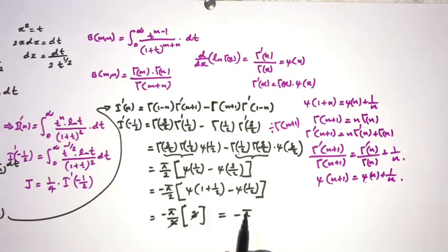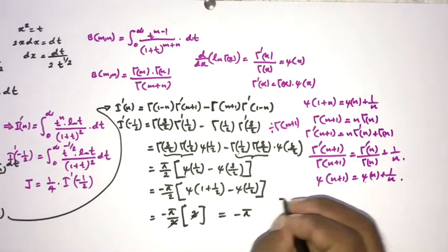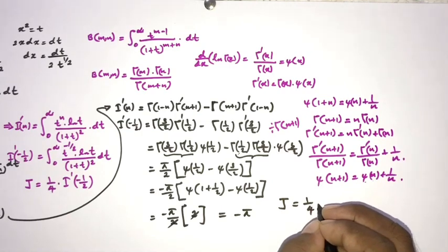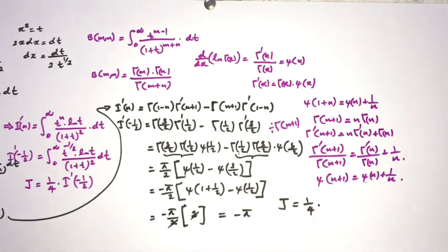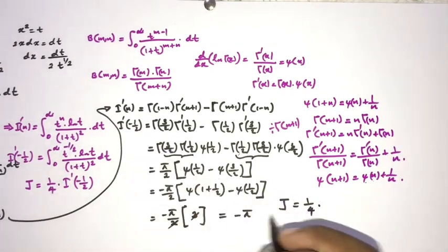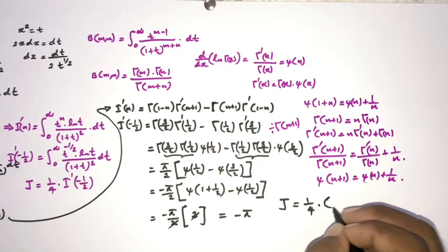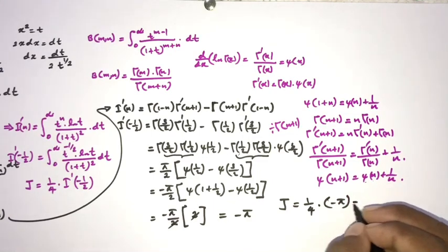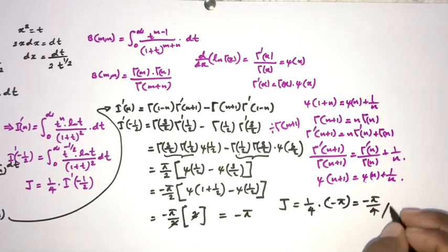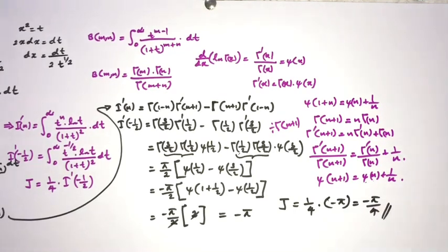Now I'(-1/2) equals minus pi. Our integral J equals 1 over 4 times I'(-1/2), so J equals 1 over 4 times minus pi, giving the final answer: minus pi over 4. Thank you for watching.